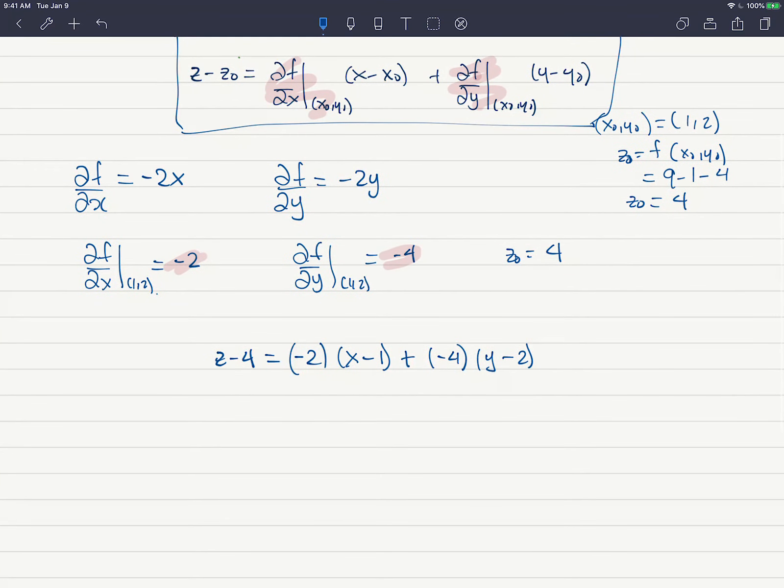So I need to see this as an equation of a plane. So let's distribute a little bit. z minus 4 equals negative 2x plus 2 minus 4y plus an 8. And so this is already a question of a plane. You can write it in different ways. Because I want to graph this, I want to have it solved for y, sorry, for z.